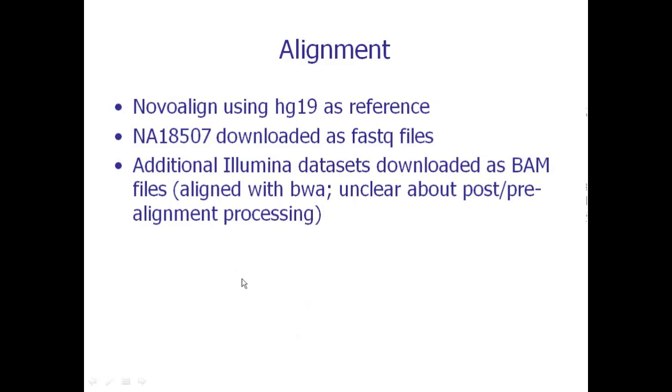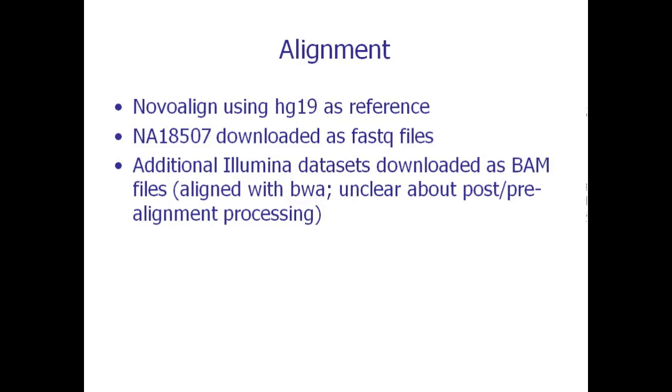For alignment, I used NovoAlign, which personal tests have revealed to be by far the most sensitive algorithm — it's also the slowest, but it is very sensitive and very specific as well. I put the Illumina data set through the same alignment pipeline that I applied to the NuGen data. In addition to that, I downloaded several additional files as BAM files that were already aligned using someone else's pipeline.